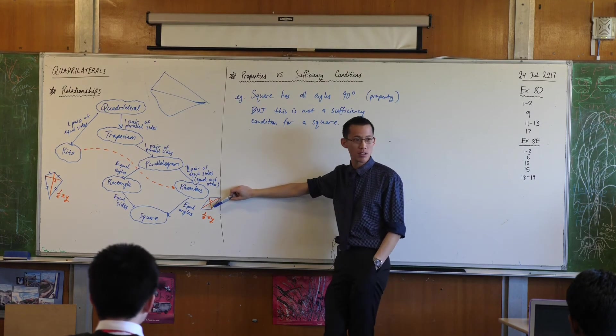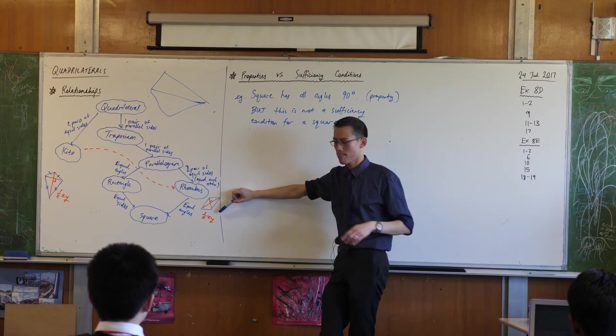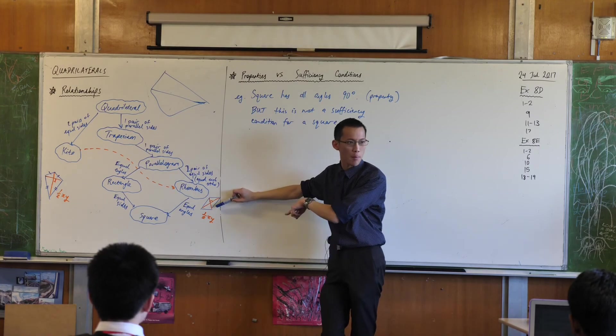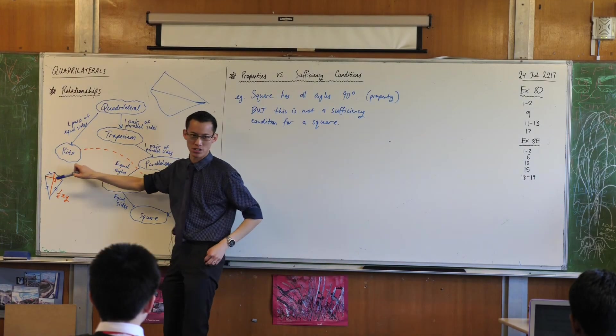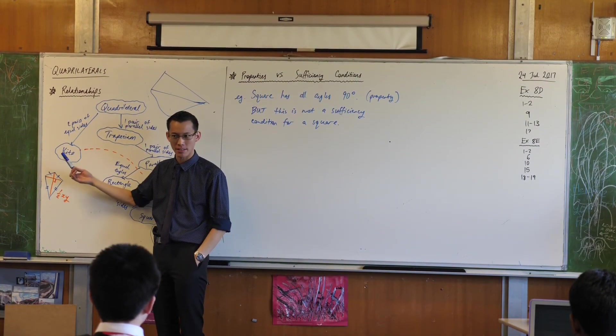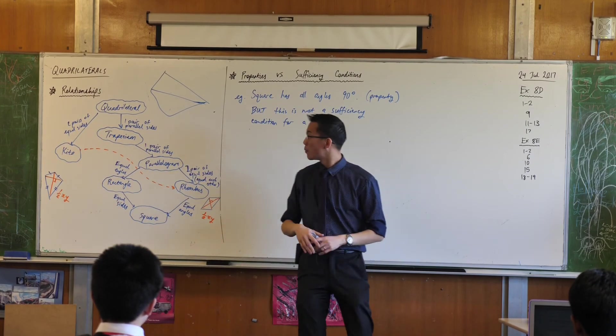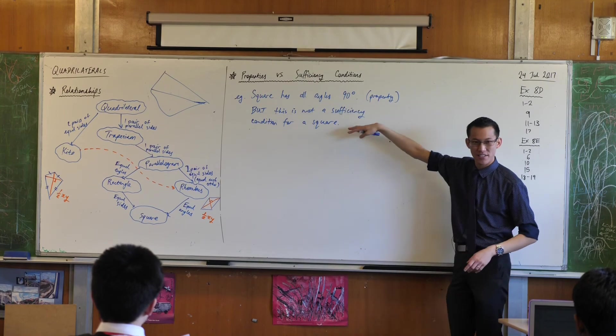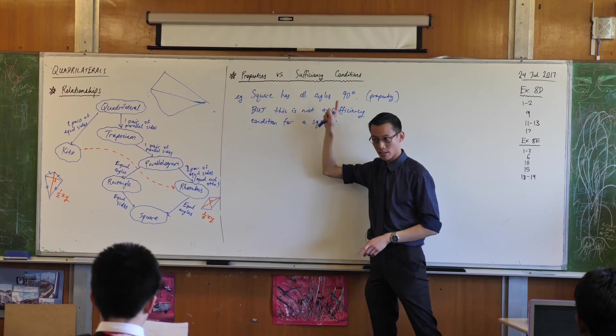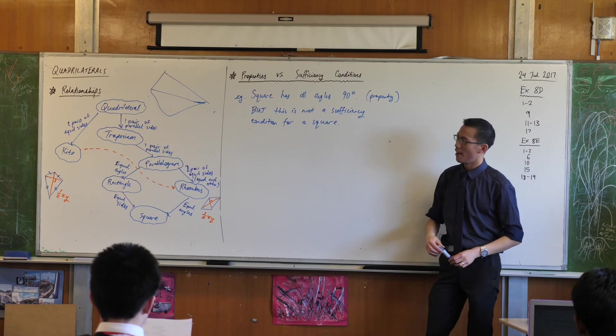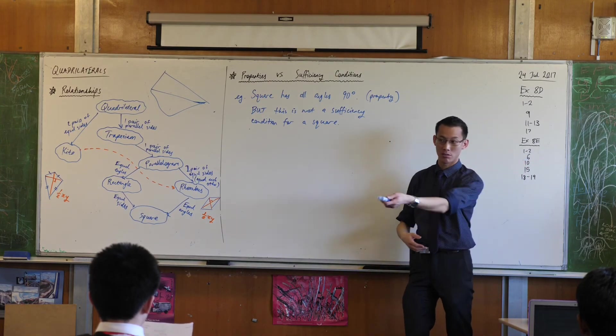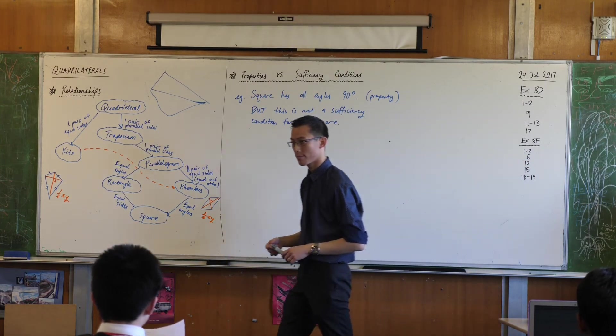Is that sufficient to show that it's a rhombus? It's not even though it's a property of a rhombus. It's only sufficient to show that it's a kite. Does that make sense? Okay. So, I'm going to pause there. I just need to make sure that you have this distinction because people often don't get that they're different things.